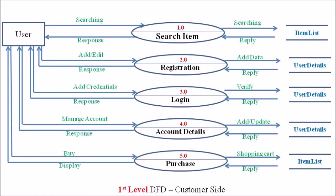The Level 2 DFD focuses on expanding each of these independent processes. In the last lecture we expanded the fourth process — account detail. In lecture 44 we expanded processes 1, 2, and 3: search item, registration, and login as Level 2 DFDs. In this lecture we are expanding the fifth process, the purchase process, leading to the Level 2 DFD of the customer side with the purchase process expansion.